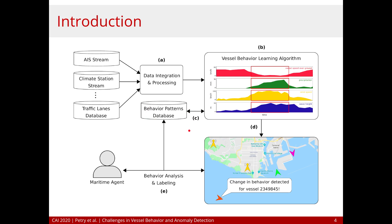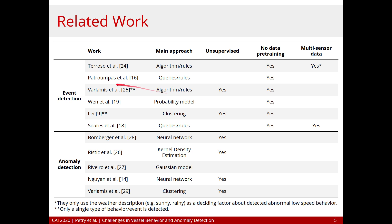Although many works have addressed vessel behavior detection, they are all ad hoc approaches — most of them don't really learn from the data and they only tackle specific issues. We group related works in two major groups: event detection and anomaly detection. Event detection cares about well-defined behaviors with a semantic meaning, for example fishing activity or vessel spitting near the coast. Anomaly detection, on the other hand, cares about detecting anomalies in the data distribution, so they don't have a semantic meaning to the anomalies.